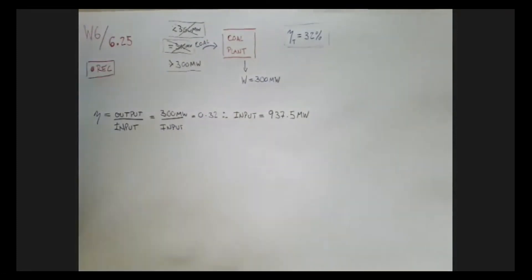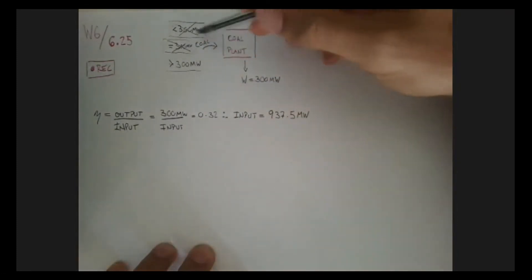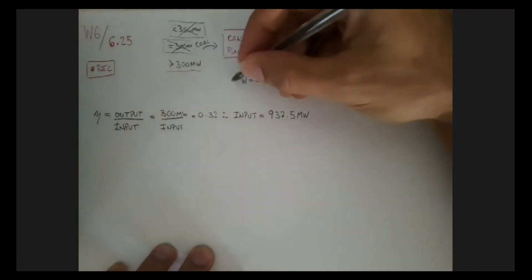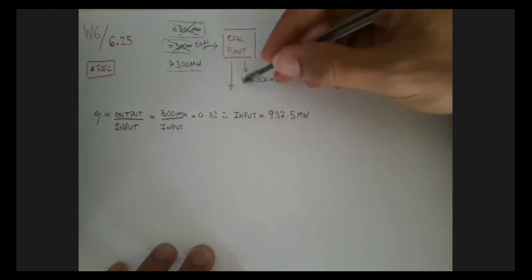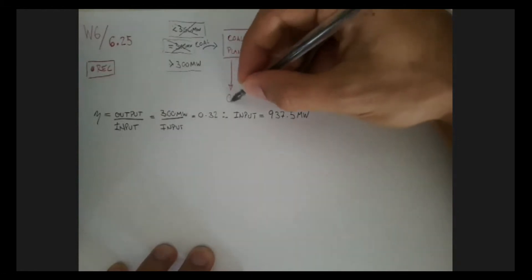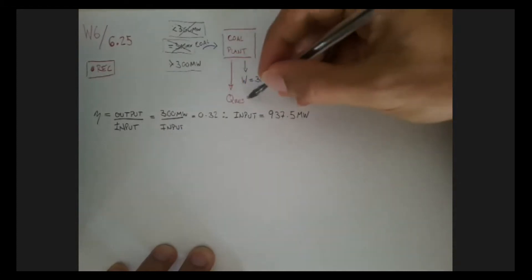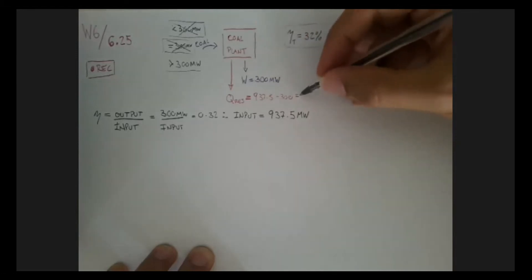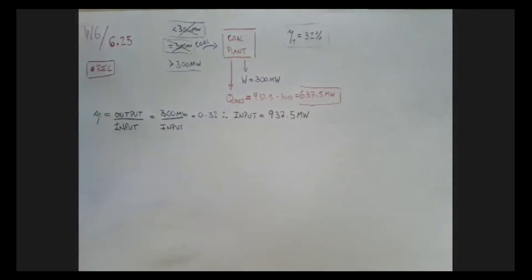Now, there's another way to think of this. We're inserting energy over here, and as an output, we're getting two things: the useful work and the rejected energy. You can call this Q rejected, which is going to be precisely the difference. It's going to be the 937.5 minus the 300. So about 637.5 megawatts of energy is being rejected by this plant. We're losing that, or in other words, that's not useful energy.